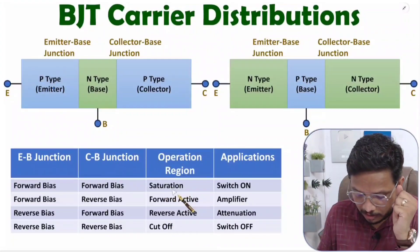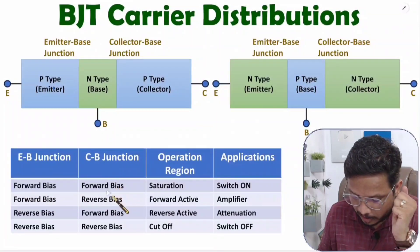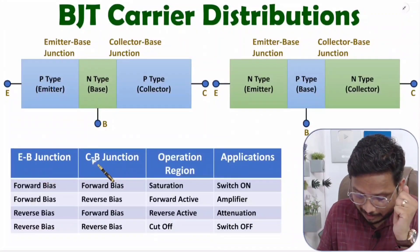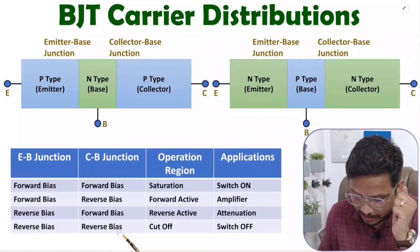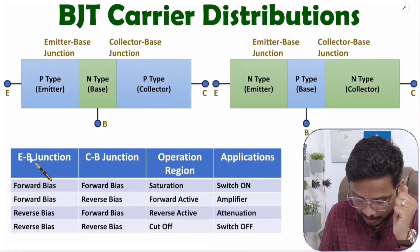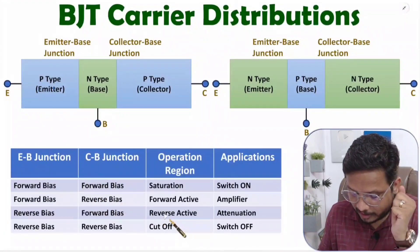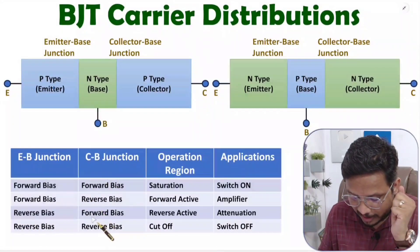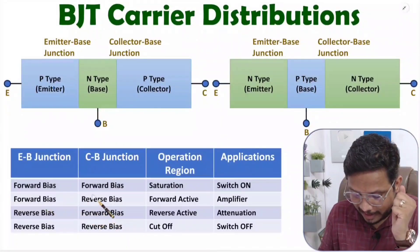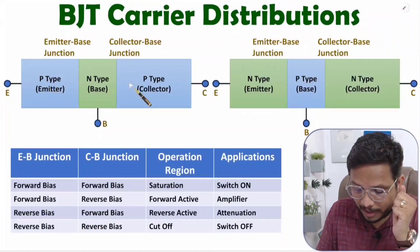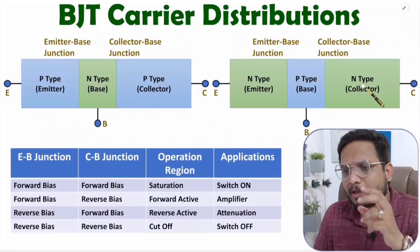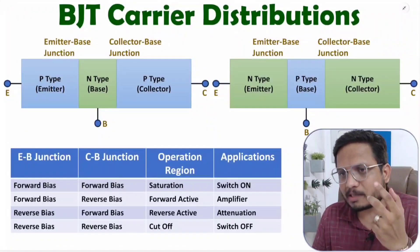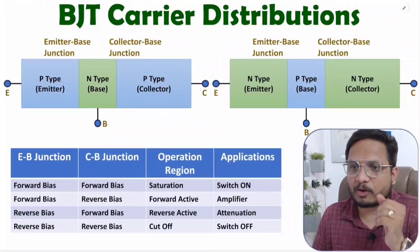For saturation, the emitter-base and collector-base junctions should both be in forward bias. For cutoff, both junctions should be in reverse bias. In forward active, the emitter-base junction is in forward bias and the collector-base is in reverse bias. In reverse active, the emitter-base junction is in reverse bias and the collector-base junction is in forward bias. This applies for both PNP and NPN transistors.